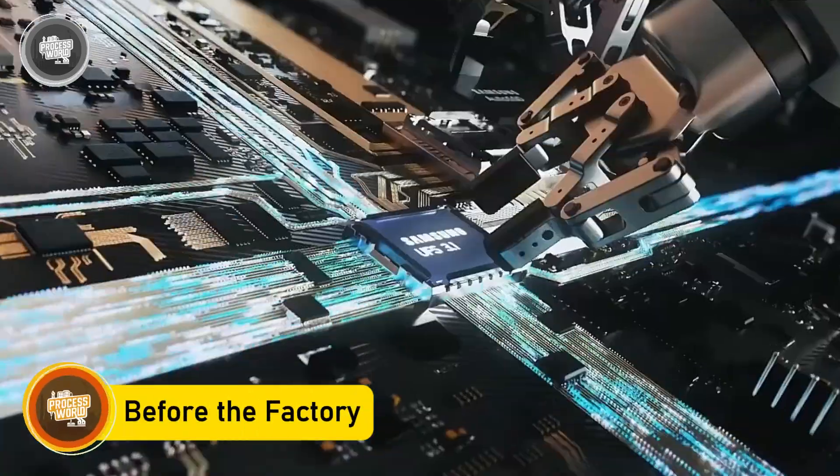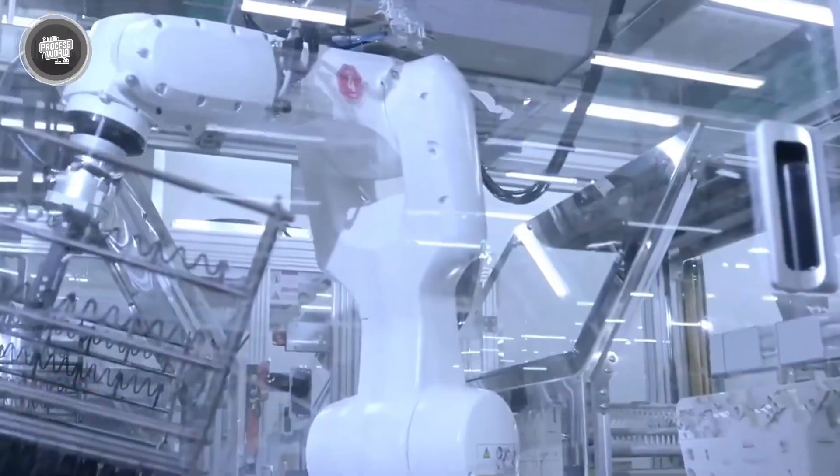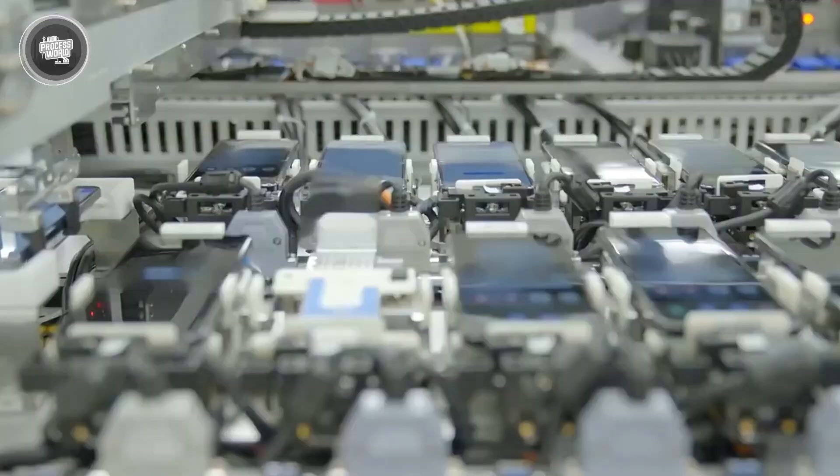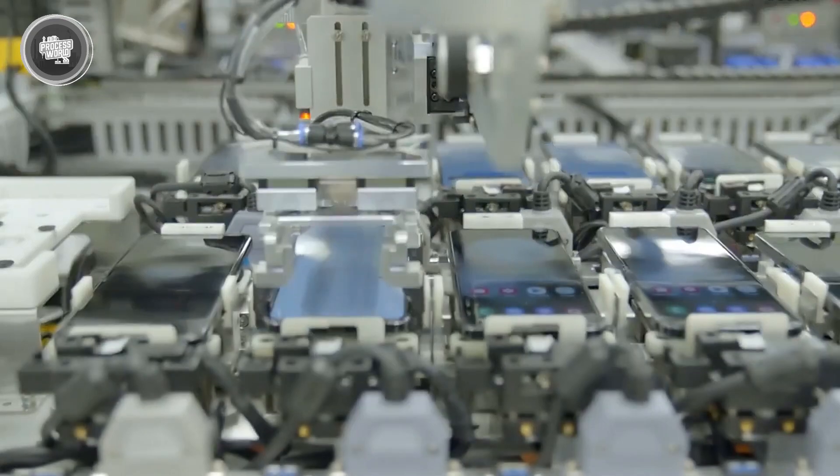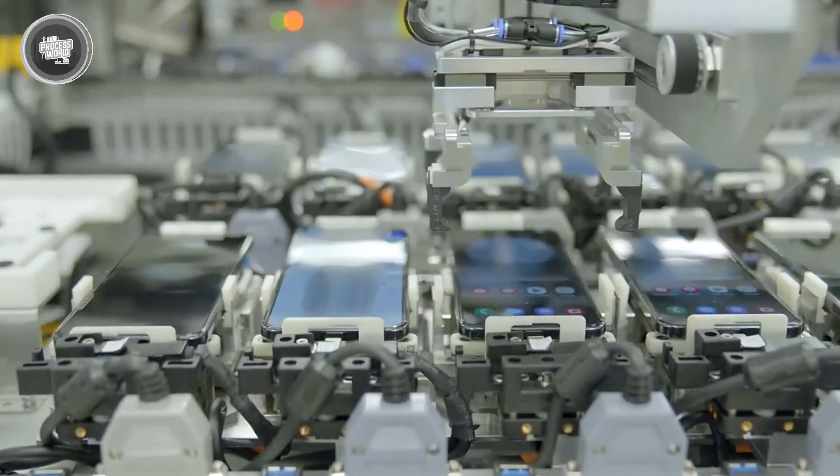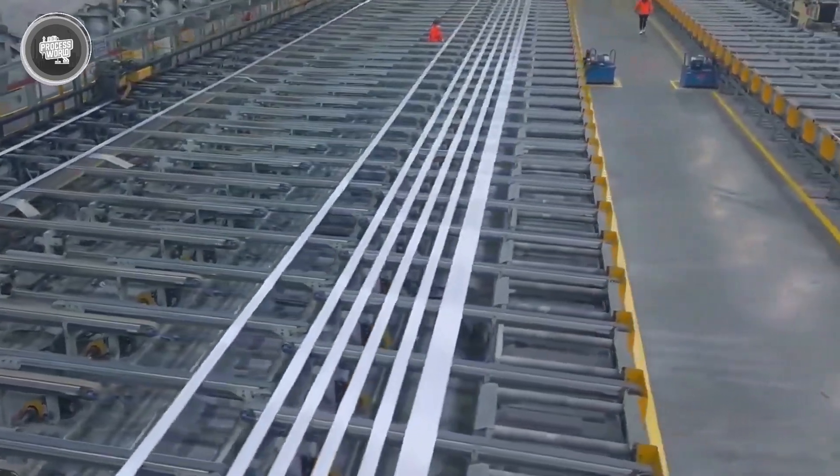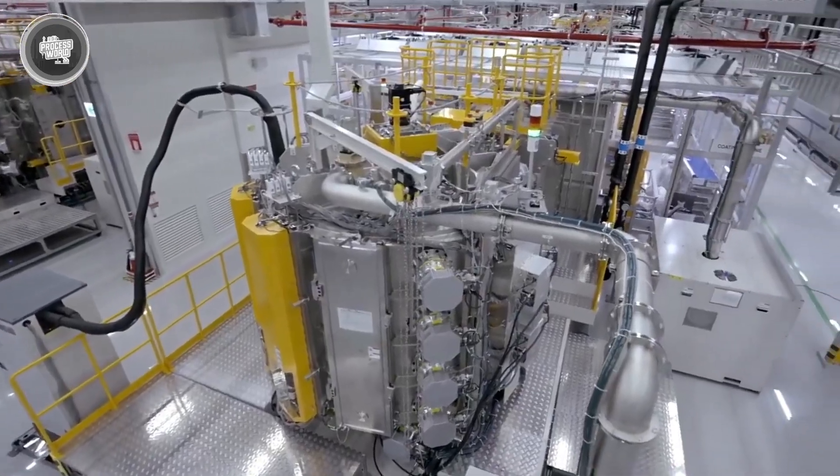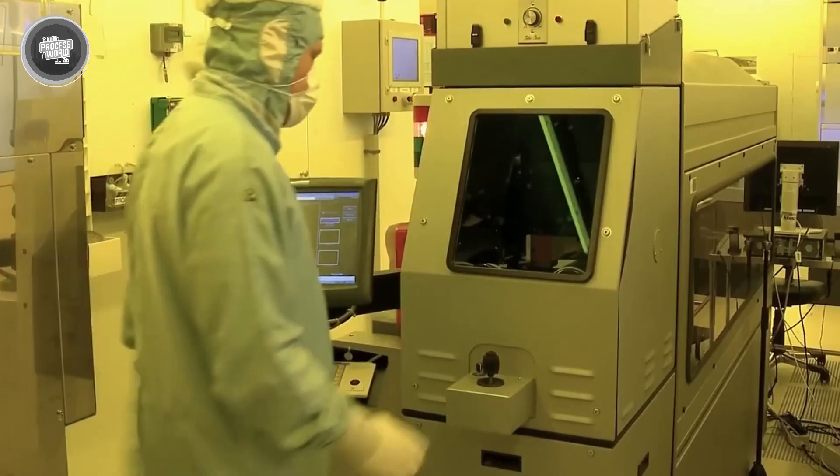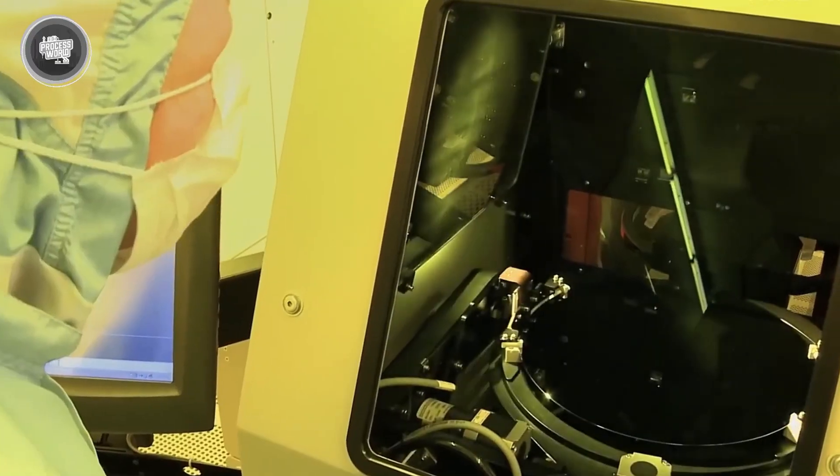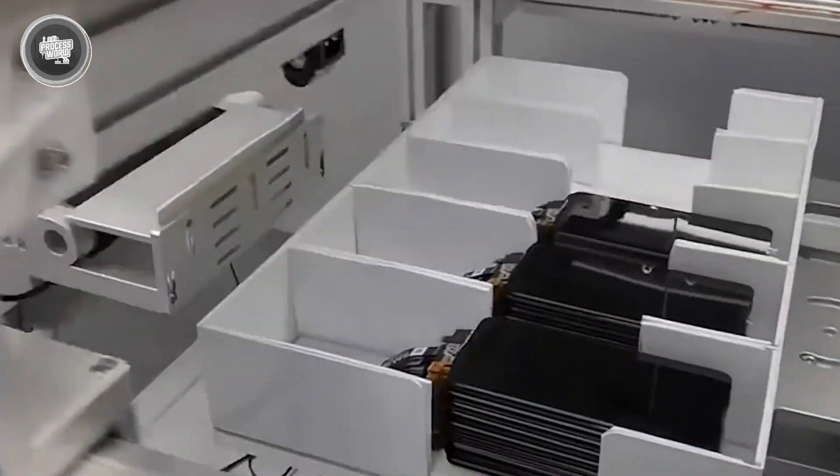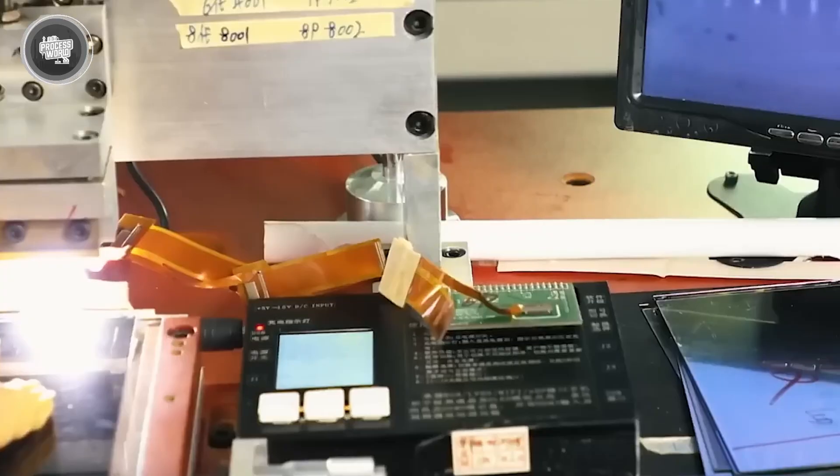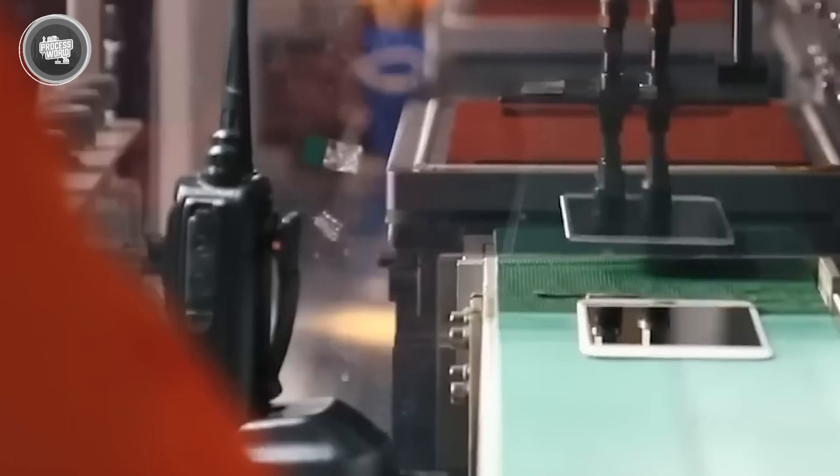Before a single phone gets assembled, Samsung's global supply chain is already in motion. It starts with design teams finalizing every detail, from the shape of the camera bump to the type of glass used on the front panel. Once those designs are locked in, Samsung begins sourcing all the key components needed to make the phone a reality. The displays are usually made in-house by Samsung Display. These are the bright, high-resolution AMOLED screens that have become one of the company's signature features.